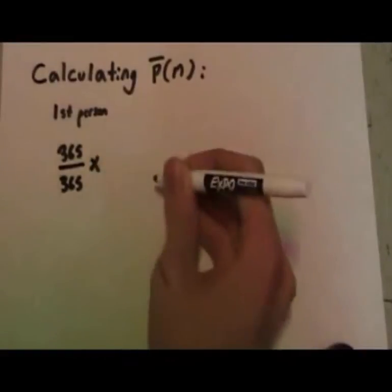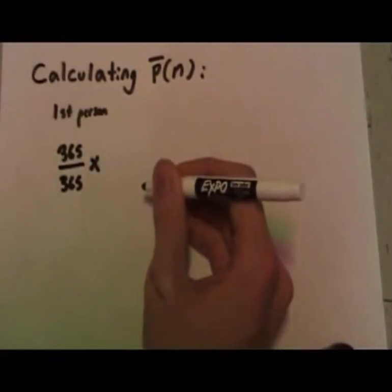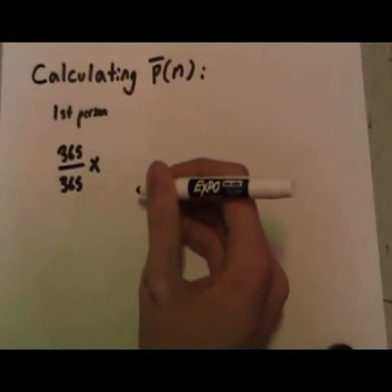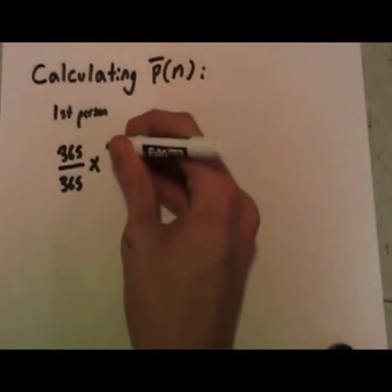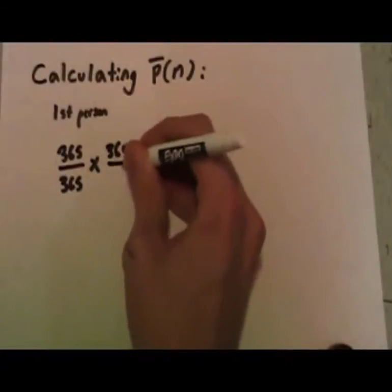Now let's consider the second person. For the second person, there's already one person in the room, so the probability of them not sharing a birthday with anyone else in the room decreases to 364 over 365.